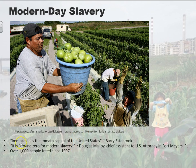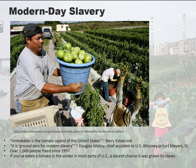Since 1997, at the time the article was written, over a thousand people had been freed from slavery in Florida in about a 10 to 12 year span. Over a thousand slaves were freed from Florida farms in the late 1990s and early 2000s. It's amazing that that's a reality. The bottom line is this is how tomatoes are grown — if you've eaten a tomato in the winter in most parts of the U.S., there's a pretty good chance it was grown by slaves.